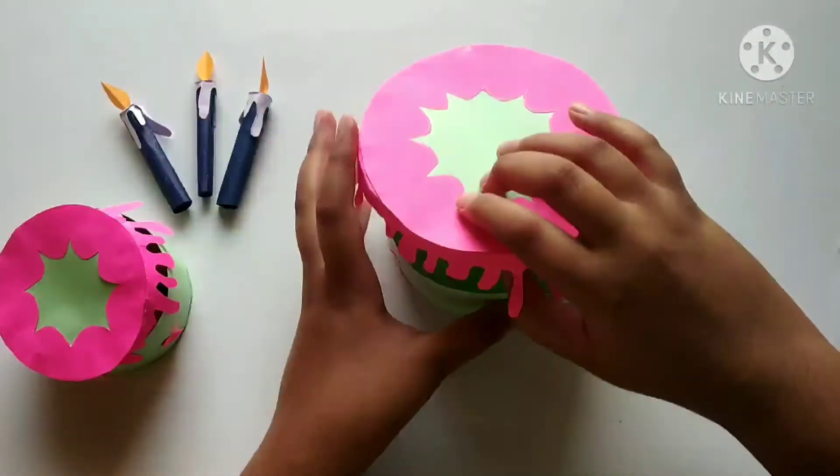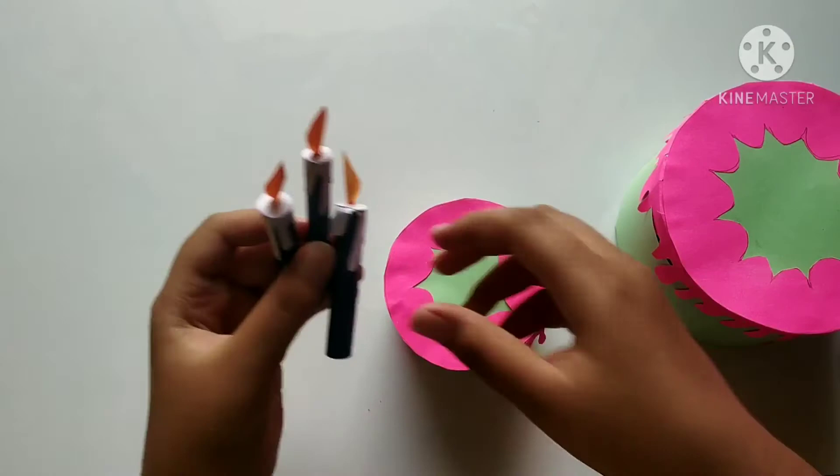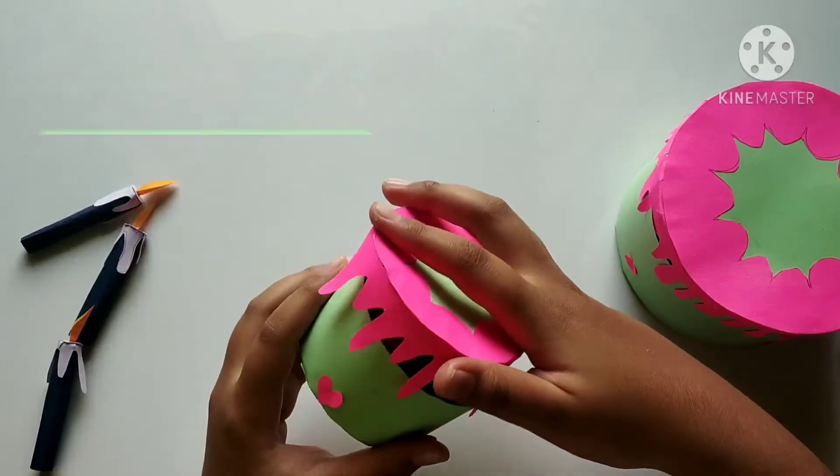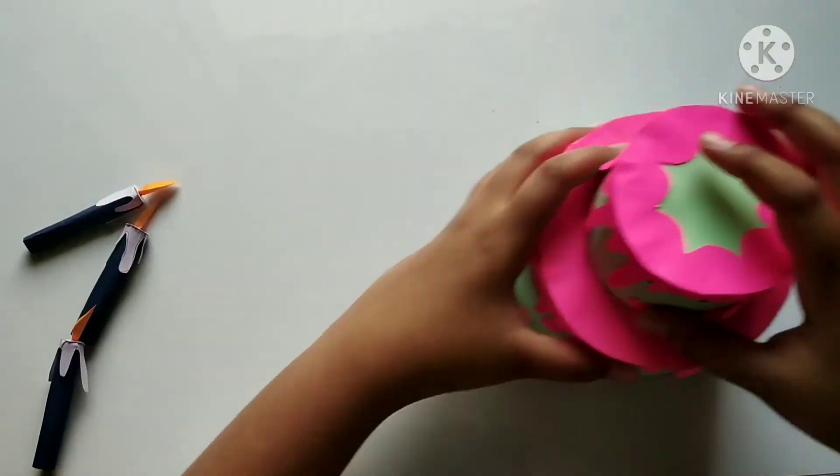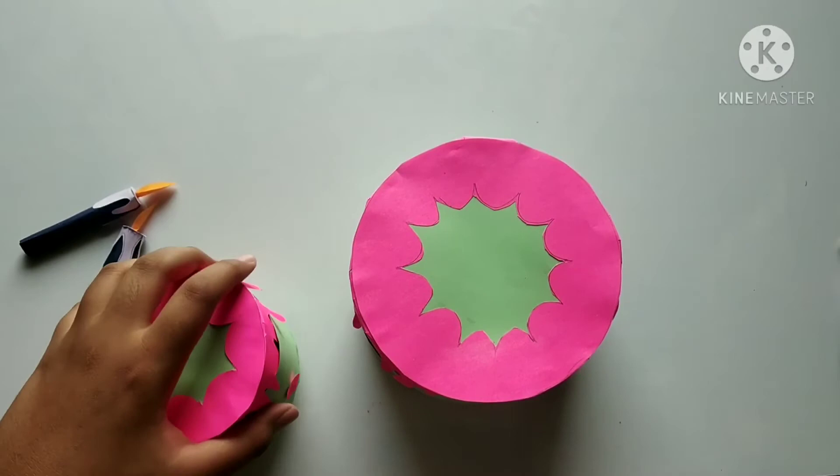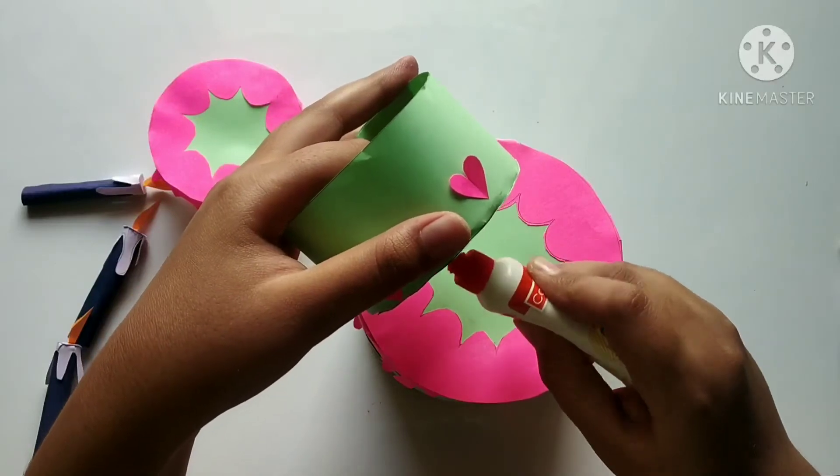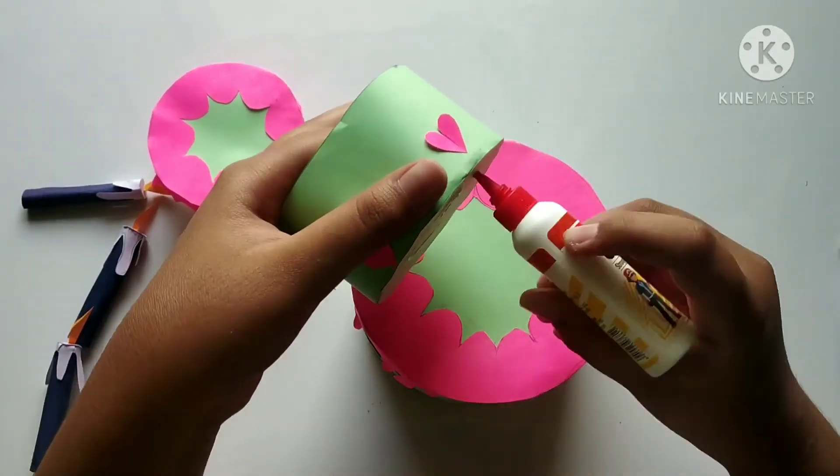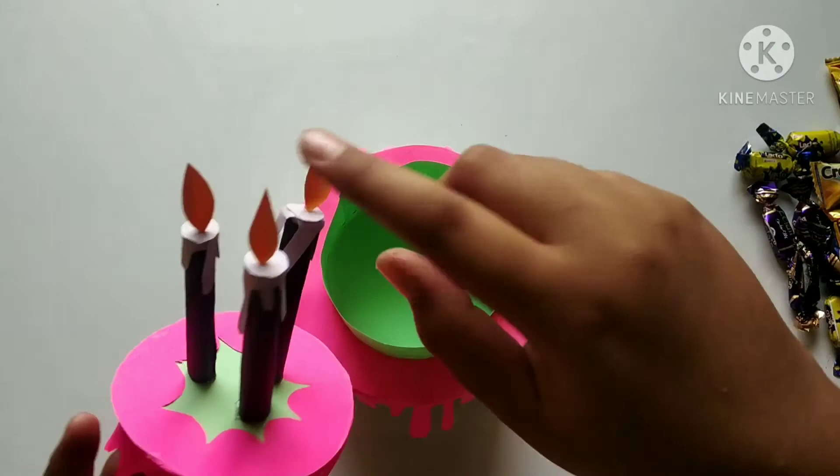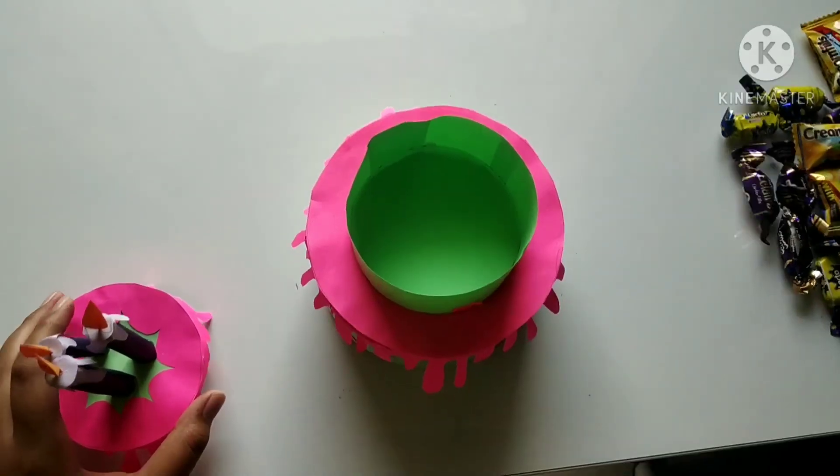Friends, we need to keep this on here. I made another box like this and I made three candles to keep on top. Now we need to stick this box on this with glue, and we need to keep it here. We can keep everything inside.